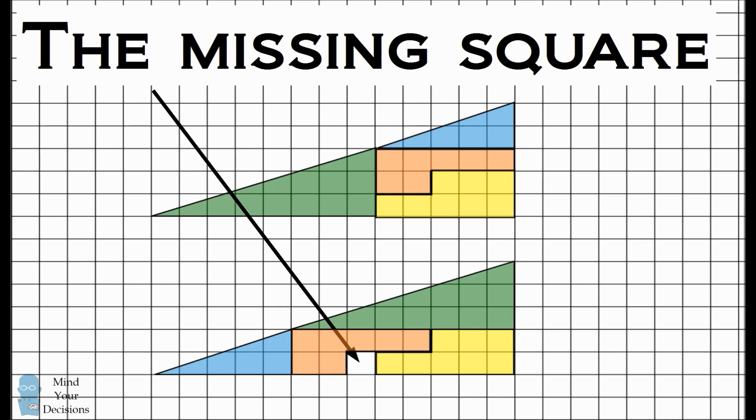This puzzle is a classic geometric problem. It's known as a dissection puzzle, and I challenge you to figure out why there's a missing square in the second figure.